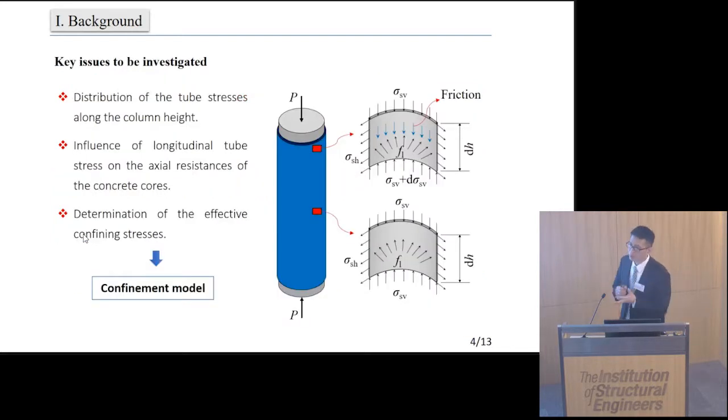Due to the special end-loading condition, the load-carrying and the confinement mechanism of this kind of column are still deserving to be investigated. As shown in this figure, at the column ends, slip between the steel tube and concrete may occur along the column height.